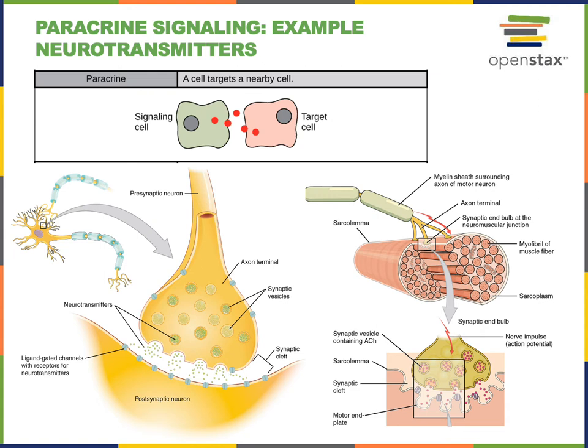Neurotransmission is an example of paracrine signaling where neurotransmitters are the paracrine intercellular signal released by the presynaptic neuron into the synaptic cleft. Neurotransmitters diffuse a short distance across the synaptic cleft and bind to receptors on the surface of the postsynaptic cell. These receptors can be ion channels that will open in response to the neurotransmitter, stimulating an electrical signal inside of the postsynaptic cell.